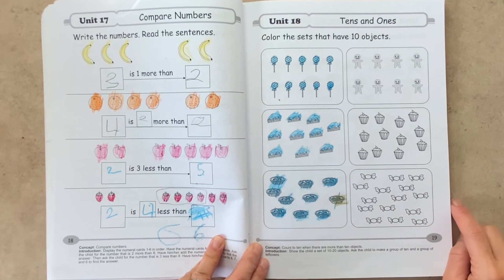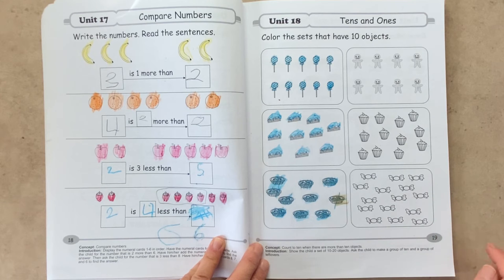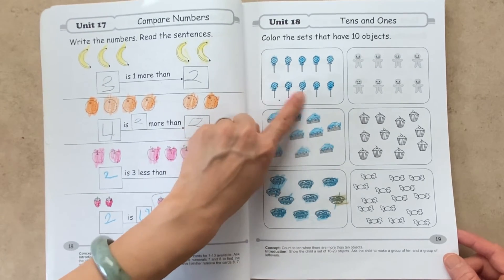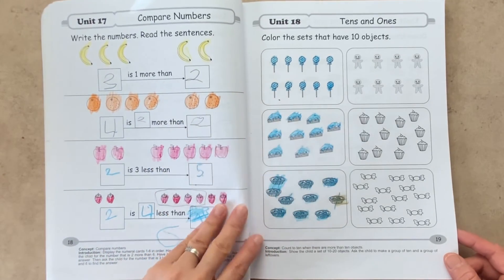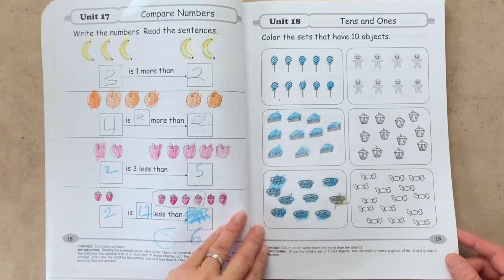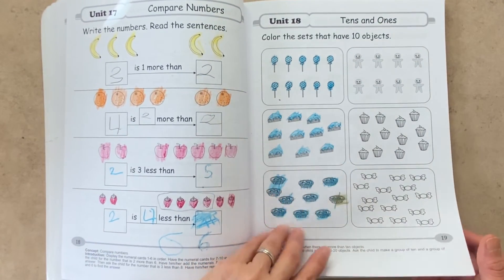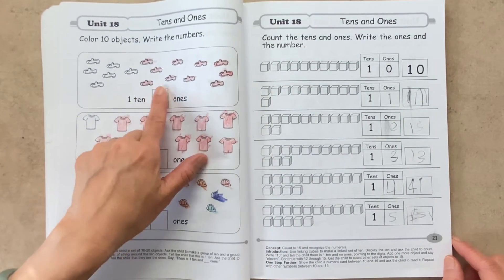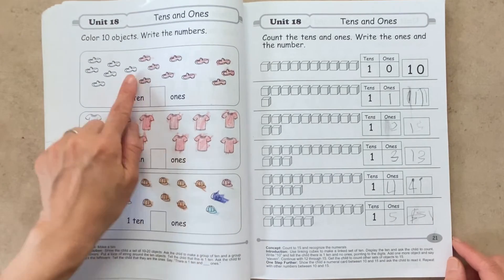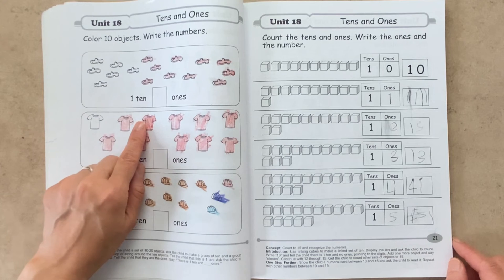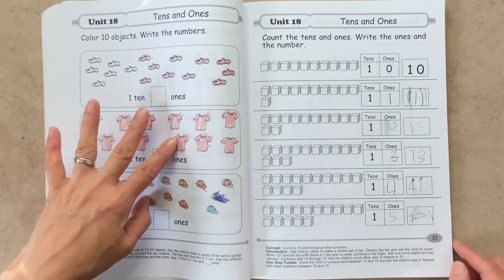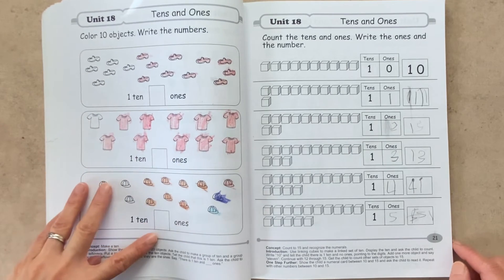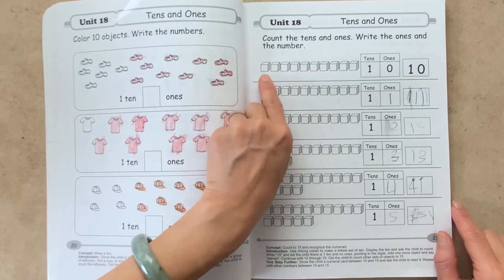And now unit 18, we are learning about 10s and 1s. And I really like this because by coloring 10 of the items, the child can clearly see how many 1s are left over. So here, we obviously don't have any 1s left over. But the next page, we see that after counting 10, so one set of 10, there's some left over. And at that time, our 5-year-old wasn't very good at writing her numbers, but she was able to tell us verbally. So here, we're doing the same thing, but we're counting blocks.